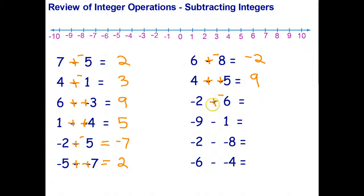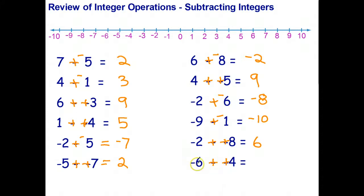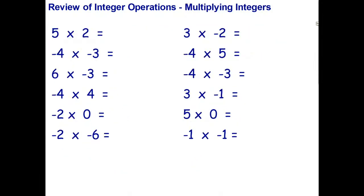Negative two subtract six becomes negative two plus negative six, which is negative eight. Negative nine subtract one becomes negative nine plus negative one, which is negative ten. Negative two subtract negative eight becomes negative two plus positive eight — I've got eight dollars and a bill for two dollars, pay off the bill and I'm still six dollars to the good. The last one: subtracting a bill of four dollars means I'm four dollars better off, so with a bill for six dollars, I pay off part of it but still owe two dollars. Every subtraction can always be turned into add the opposite.